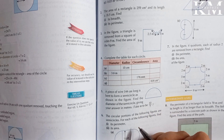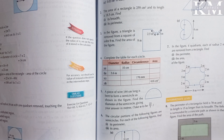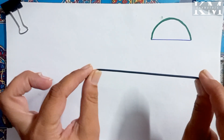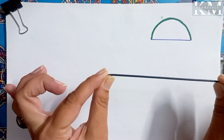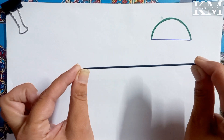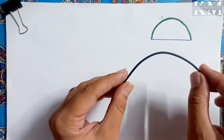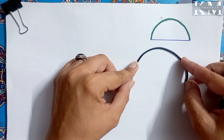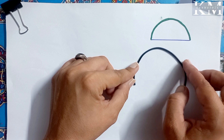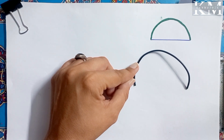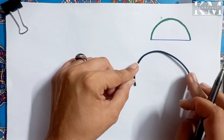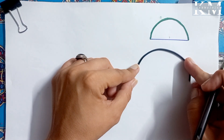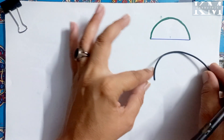It becomes easy to attempt the question when you make a sketch in your mind about how we have to solve it. The figure is in front of you — we have to find the diameter. Let me explain a little. We have a wire whose length is 144 centimeters. We bent this wire so that it forms a semi-circle, i.e., half circle. Now diameter is the distance from here to here. We will convert the circle's properties to semi-circle.